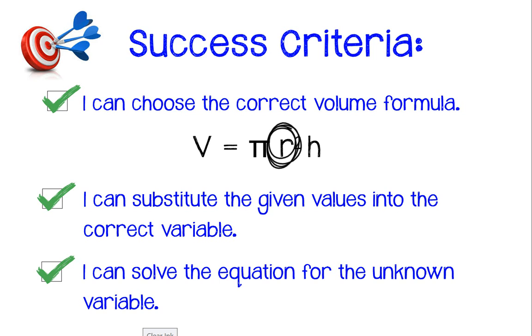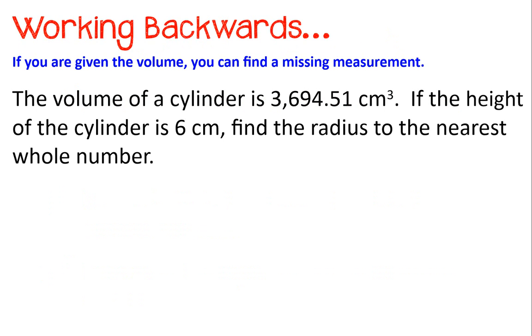That is the only thing we're doing in this particular video. In order to do that, we have to use some inverse operations. We're going to use some properties of equality to remove multiplying by pi and to remove multiplying by h. Let's take a look at our first question here. If you're given the volume, you can find a missing measurement by working backwards and filling in your given variables. The volume of a cylinder is 3694.51 cubic centimeters and the height is 6 centimeters. Then you need to find the radius to the nearest whole number.